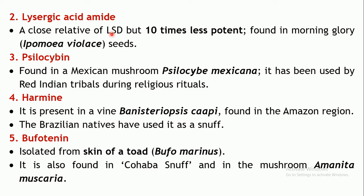Lysergic acid amide is usually found in morning glory seeds, that is Ipomoea tricolor. The next drug is psilocybin, which is found in the Mexican mushroom Psilocybe mexicana and is usually used by tribals for certain religious rituals. The next drug is harmine, which is present in the vine Banisteriopsis caapi, found usually in the Amazon regions, where it is used as a snuff and has abuse liability.